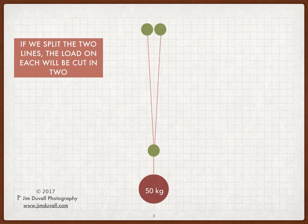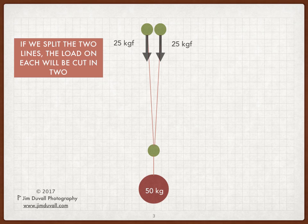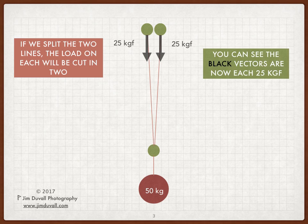If we use two anchor points right next to each other, the force will be divided in half. We can show this as two vectors, one acting on each anchor point. Each one now has a magnitude 25 kg force downward in the direction of gravity.